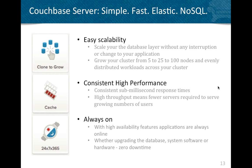Couchbase has an in-memory object-managed cache, and because of this, you get consistent sub-millisecond response times. Keeping data items in cache is much faster than keeping them on disk. You also get high throughput, which means you need fewer servers — fewer Couchbase nodes — to service your growing number of users. You can add a new node to a running Couchbase cluster all while your application remains online.